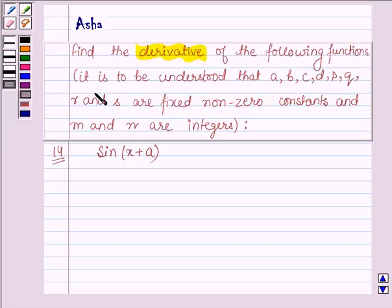It is to be understood that A, B, C, D, P, Q, R and S are fixed non-zero constants and M and N are integers.